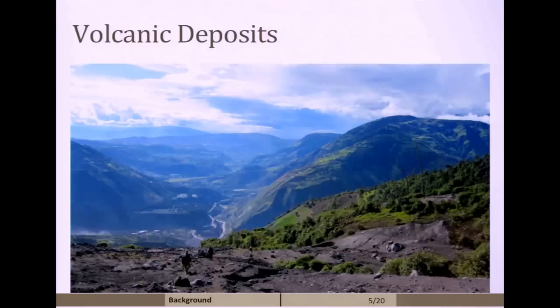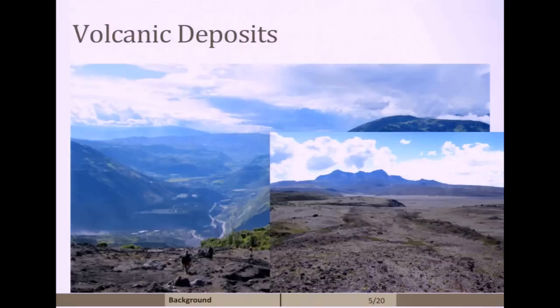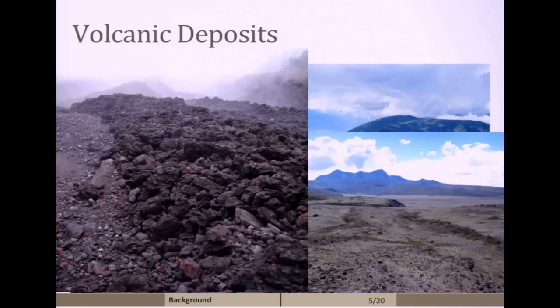These flows, depending on the flow regime, they can either sediment out or not sediment particles. Depending on that flow regime, you can get a deposit like this. You can get a deposit where the flows are basically self-channelized. You can also get deposits with these larger clasts or particles that we call breadcrust bombs, which I'll talk about a little later.